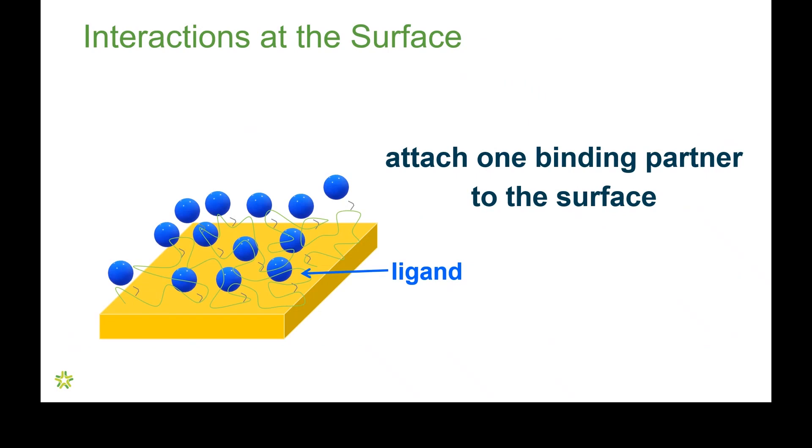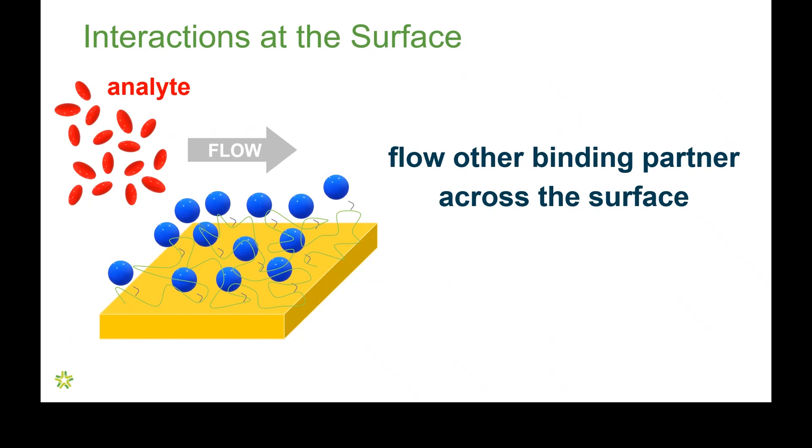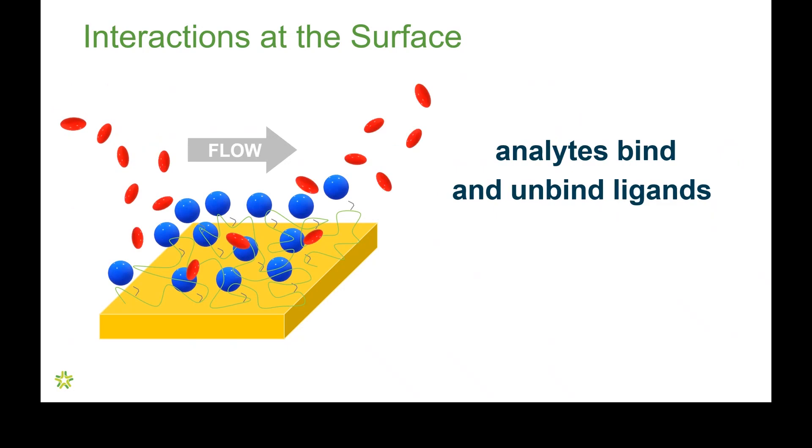Now, the binding partner attached to the surface is called the ligand. The binding partner that floats across it and stays in solution is called the analyte. With SPR, we can measure how the analyte binds to the surface and how it unbinds from the surface. We also call this analyte associating to the surface and dissociating from the surface.